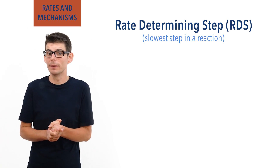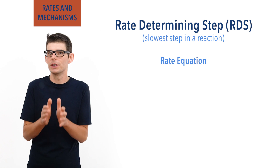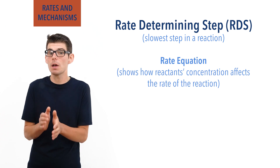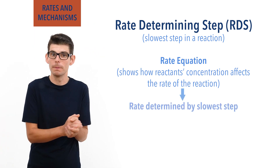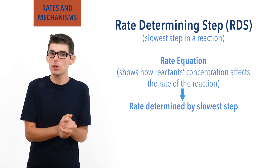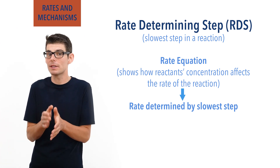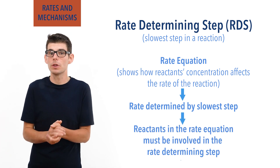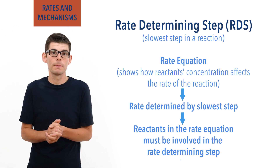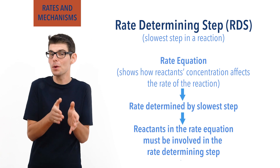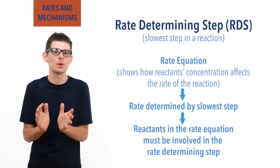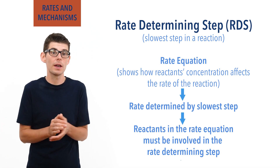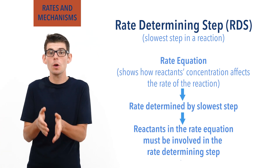From this we can make the link: if the rate equation for a reaction describes how the concentrations of reactants affect the rate, and the rate is determined by the slowest step in a multi-step reaction, then the reactants involved in the rate equation must be involved in the rate determining step. Any reactants of the whole reaction that aren't in the rate equation must therefore be involved in some other step, meaning the reaction must happen in more than one step. This gives us very useful information regarding how a reaction may occur and enables us to predict mechanisms showing each step.